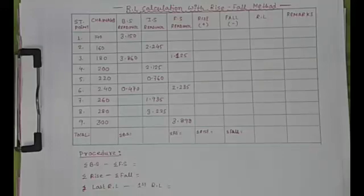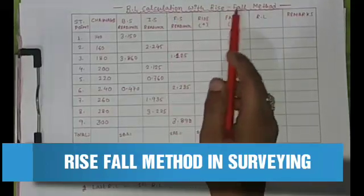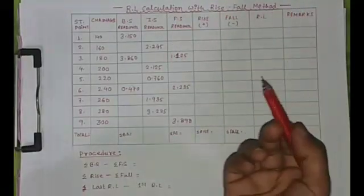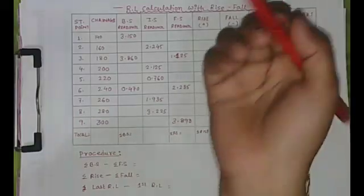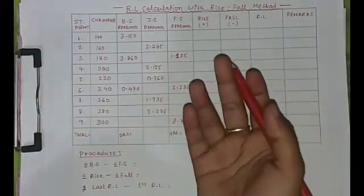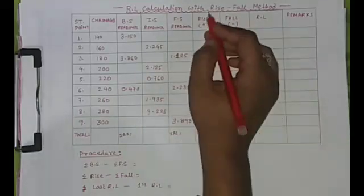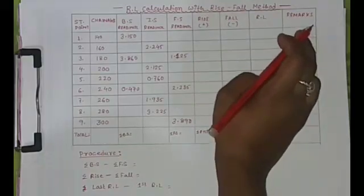Hi friends, welcome to Learn and Explore. Today I will discuss a new topic: RL calculation with the help of the Rise and Fall method. As we all know, RL calculation is done with various methods — the collimation system and the Rise and Fall system. The Rise and Fall system is a very well-known method of RL calculation.